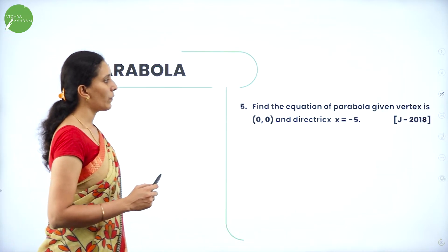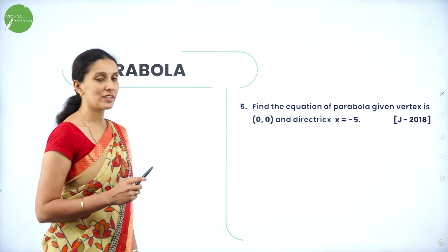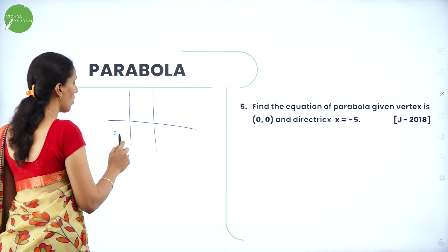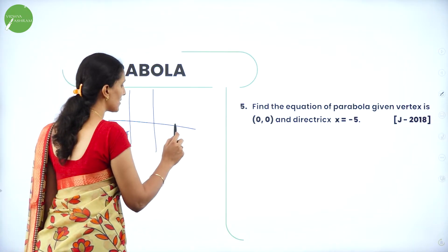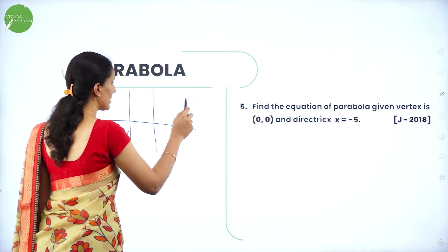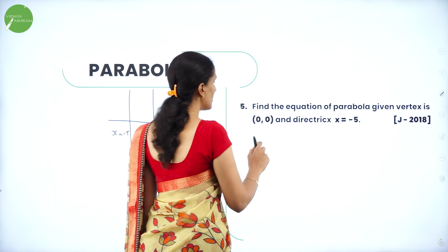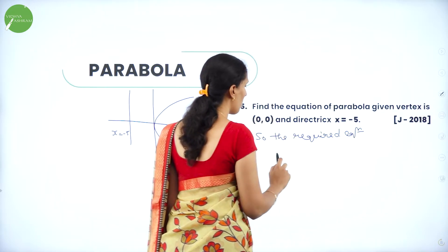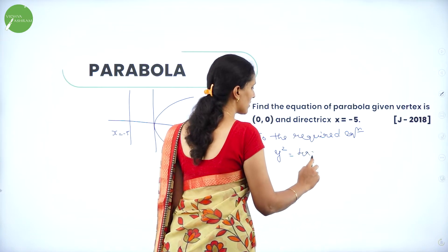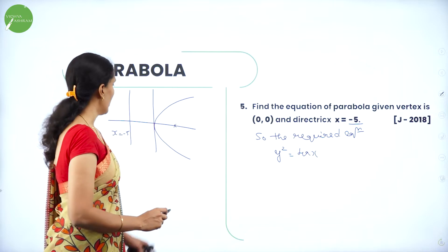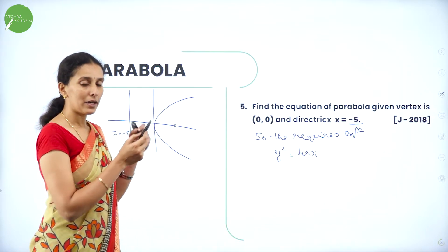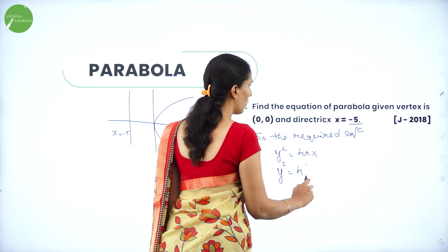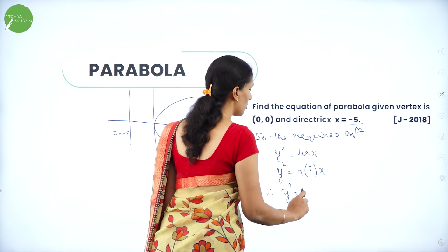Next: Find the equation of the parabola given that vertex is (0, 0) and directrix is x = −5. Since the directrix lies on the negative side of the x-axis, the focus must be on the positive side — so the given parabola is a right-handed parabola. The required equation is of the form y² = 4Ax. Here A = 5, so y² = 4 × 5 × x, giving y² = 20x.